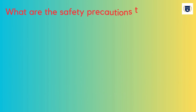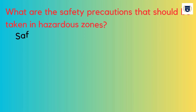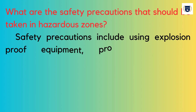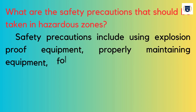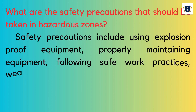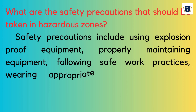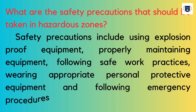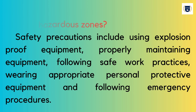What are the safety precautions that should be taken in hazardous zones? Safety precautions include using explosion-proof equipment, properly maintaining equipment, following safe work practices, wearing appropriate personal protective equipment, and following emergency procedures.